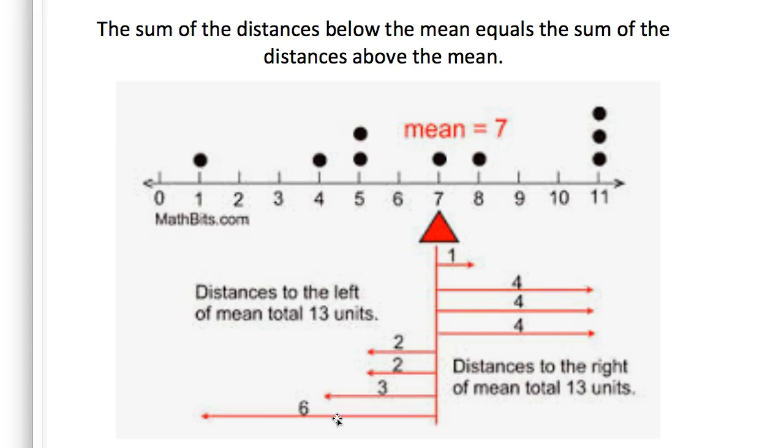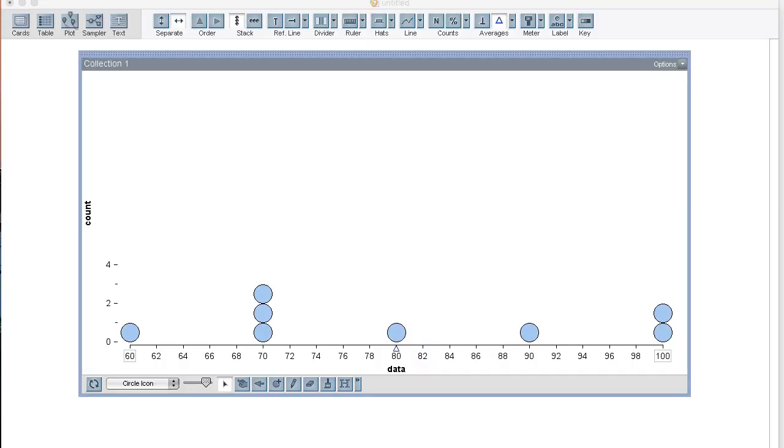Now, if we view deviations below the mean as negative and deviations above the mean as positive, then the sum of all those deviations from the mean will be zero. To see this, I will use a tool that measures the deviation or the signed distance from the mean.